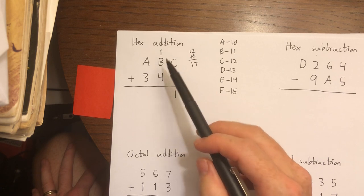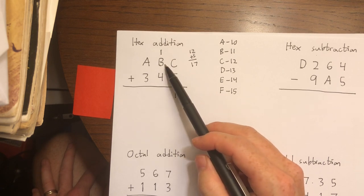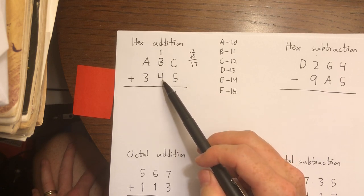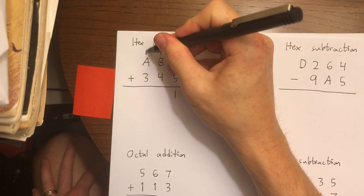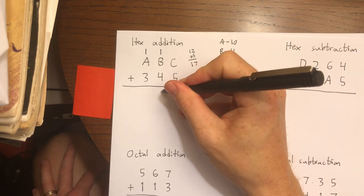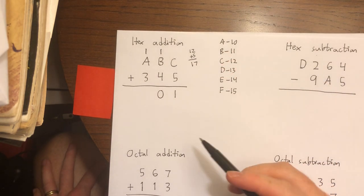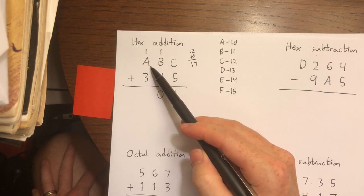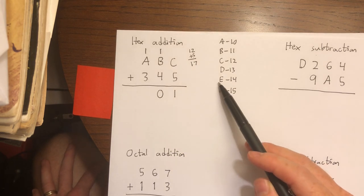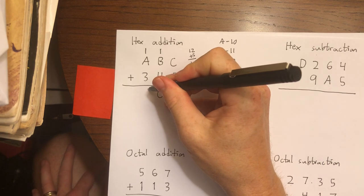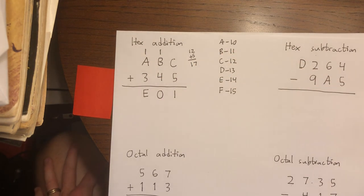Now I have 1 plus 11 gives me 12, plus 4 gives me 16. Again, I'm going to have to carry over 16 to the next column, which leaves me with a sum of 0 there. And finally, 1 plus 10 is 11, plus 3 is 14. 14 I write in hex with the character E.